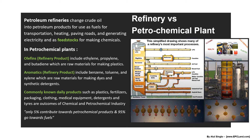Olefins include ethylene, propylene, and butane, which are raw materials for making plastics in the petrochemical plant. Aromatics include benzene, toluene, and xylene, which are raw materials used to make dyes and synthetic detergents. So both olefins and aromatics, as outcomes of the refinery, are used as raw materials in the petrochemical industry.